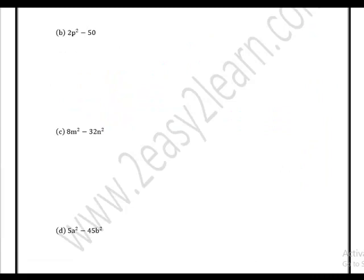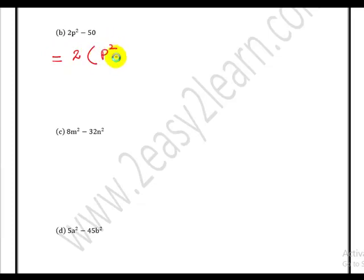For part b, 2p squared minus 50 — we apply the taking common method because there is no grouping. The difference of squares does not apply directly because p is a square term but 2 is not a perfect square and 50 is not a perfect square. So taking 2 as common, the bracket becomes p squared minus 25. Be careful — we look at this bracket to see if it can be further factorized.